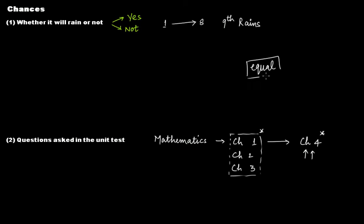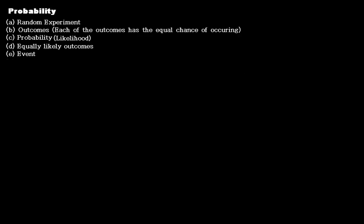This is the basic difference between when we talk about chances and when we talk about probability. In probability, things are a little different. Let me discuss these five points related to probability one by one. This video is going to be a little longer, but it's really very important to understand these five points properly. These are the very basic things about probability.